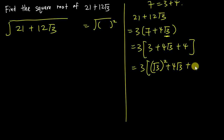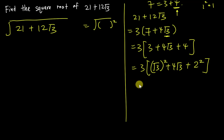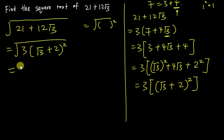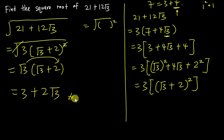Now, 3 = (√3)² and 4 = 2², so the middle term 4√3 = 2 × √3 × 2. This matches the pattern (√3 + 2)². So the expression becomes 3(√3 + 2)². Taking the square root: √3 · (√3 + 2) = 3 + 2√3. That's the final answer. I hope next time you see something like this in an exam you know how to do it. See you in the next video!